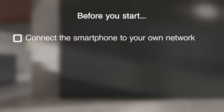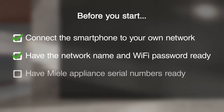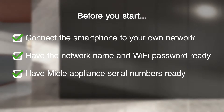Before you start, ensure that your smartphone or tablet is on your local network. Have the name and password for your local network ready. You and your smartphone or tablet must be in the vicinity of your Miele appliance. Enter the serial number of your Miele appliance, which can be found on the data plate.